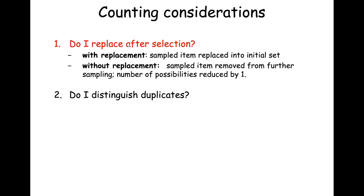With replacement means that when you sample an item, it is replaced back into the initial set, so the number of available alternatives for each pick stays the same. Without replacement means the sampled item is removed from further sampling, so the number of possibilities for the next pick is reduced by one. The other consideration is: do you distinguish duplicates?